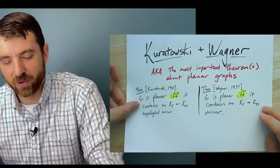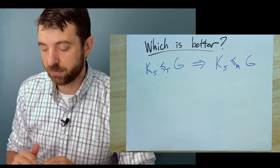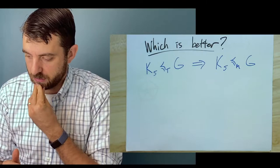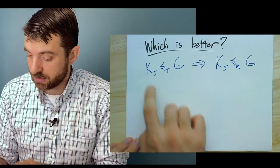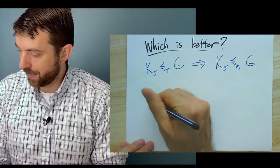You might ask: which theorem is better? One's about minors, one's about topological minors. One direction seems clear: if you're a topological minor, then you're a minor. Every topological minor is a minor. Looking at the contrapositive: if K5 is not a minor of your graph, then it's also not a topological minor of your graph.